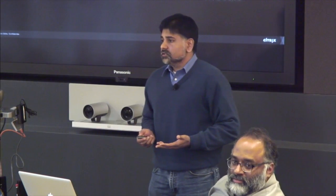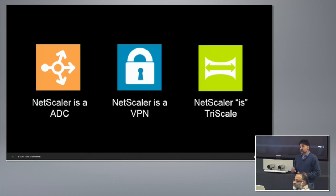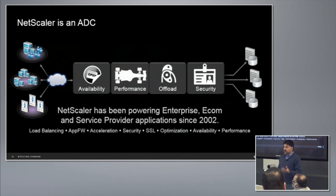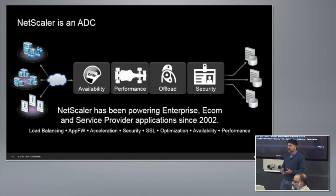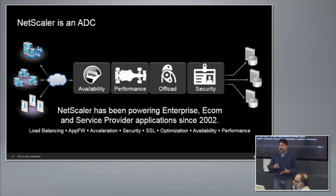Citrix is probably best known for virtualization software, but many people don't know the breadth of our networking products. NetScaler has an ADC component and a VPN component. A big part of how we think about our product is around elasticity. On the ADC piece, this is what you'd expect from any ADC: full load balancing stack, SSL, app firewall, performance characteristics, etc. It's definitely a lot more than HAProxy and on par with all of our competitors in the landscape.